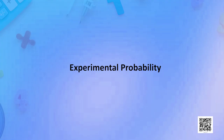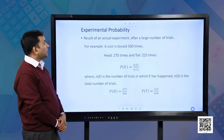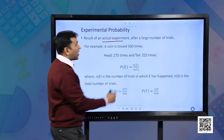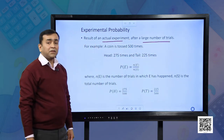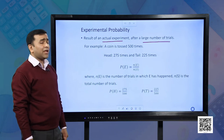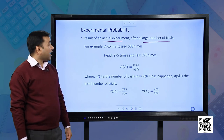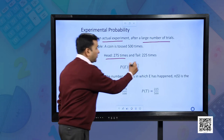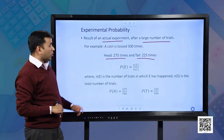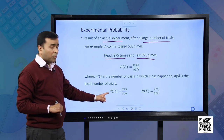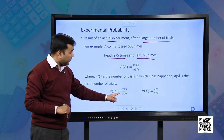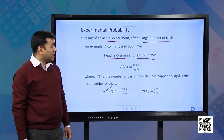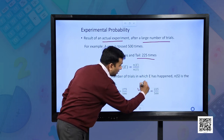Let us understand what experimental probability is. Experimental probability is based on actual experiment — we need to conduct a large number of trials. For example, if we toss a coin 500 times and note that head appears 275 times and tail appears 225 times, then we find the probability using the formula. We get the probability of H as 275 divided by 500, and the probability of tail as 225 divided by 500.